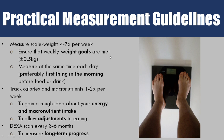Here are practical guidelines to follow this process. First, measure your scale weight preferably every day, or at least four times per week, to ensure you're meeting your weekly weight goals within plus or minus 0.5 kilos. It's best to weigh yourself at the same time each day, preferably first thing in the morning before any food or drink for consistency. Then track your calories and macronutrients once or twice per week to get a rough idea of your intake.